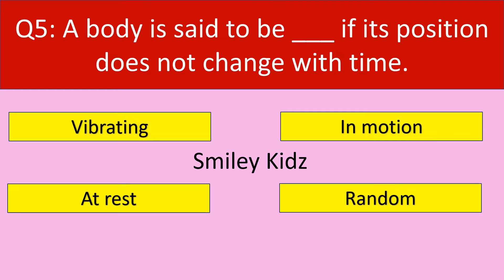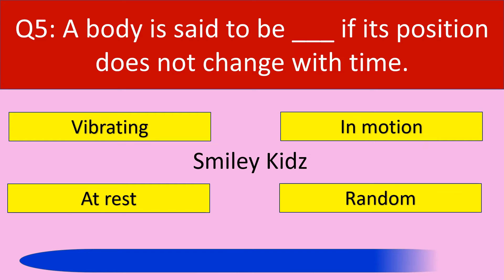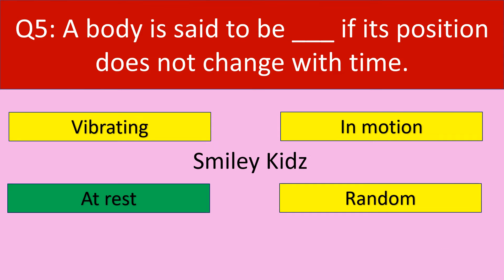Question number 5. A body is said to be dash if its position does not change with time. Your options are vibrating, in motion, at rest, random. Your time starts now. Time up. The correct answer is at rest. A body is said to be at rest if its position does not change with time.